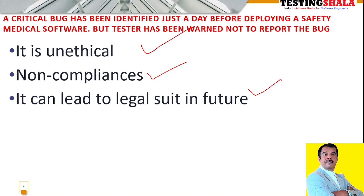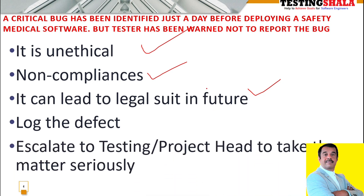Because of that, as a tester, what you should do is you should log the defect at any cost. You should not forget — whoever tells you whatever, you should log the defect whenever you identify it based on your test execution. Then you should escalate to your nearest lead — it could be your test lead or project head — to make a serious note and take a decision. At least at your level, you should not follow any of these unethical procedures. Non-compliance can lead to a bad name for your company as well as legal issues in the future.